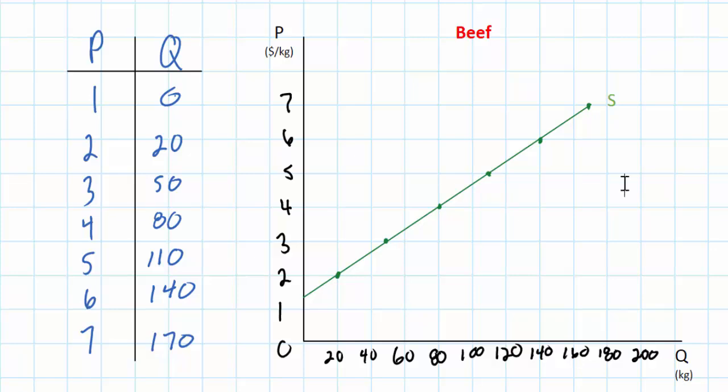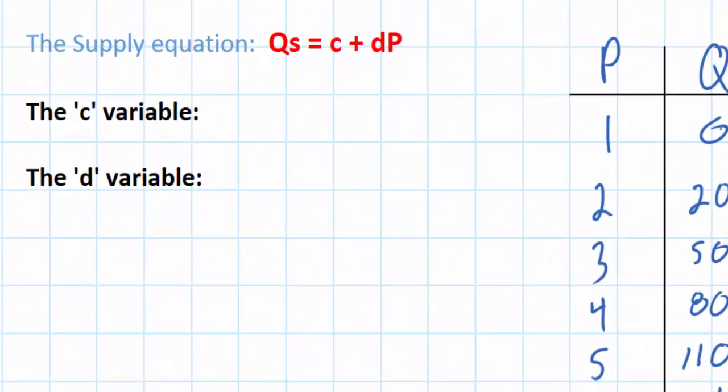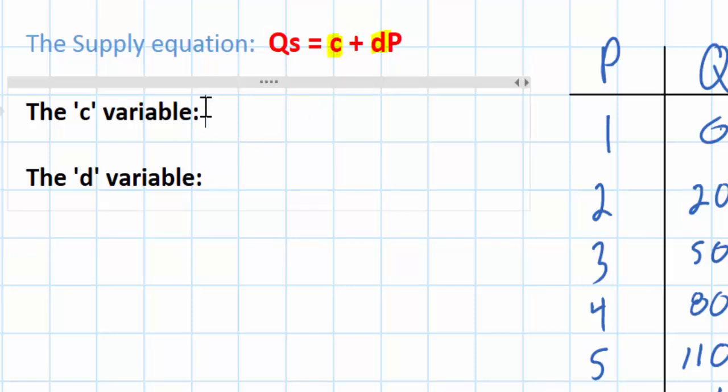Let's look at the generic supply equation up in the upper left, and then we'll talk about what the different variables represent. A generic supply equation can be expressed as: the quantity supplied of a good equals C plus D times the price. The question is, what do the C variable and the D variable in our supply equation represent?